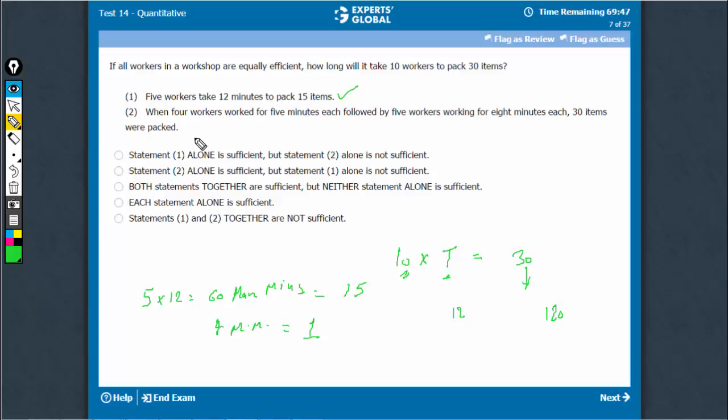Come to 2. 4 workers work for 5 minutes each, 4 into 5 man minutes plus 5 into 8 for 40. This is in all 60 man minutes, 30 items were packed, 30 units of work. So 60 man minutes is 30 units of work.